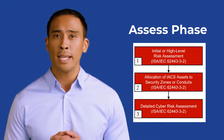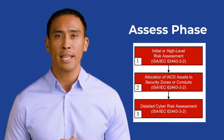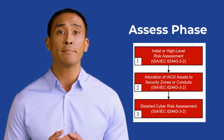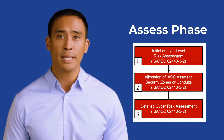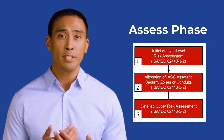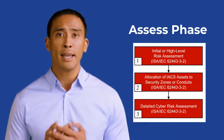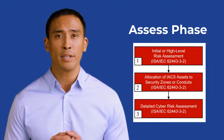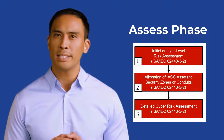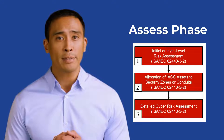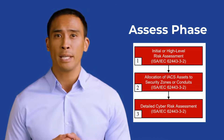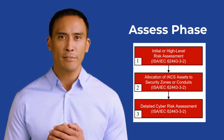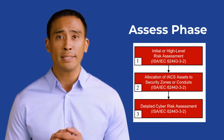We begin with the assess phase. Topics include high-level cyber risk assessment, allocation of IACS assets to security zones or conduits, and detailed cyber risk assessment. ISA Standard 62443-3-2 provides guidelines for the assess phase. Start by identifying and cataloging all IACS assets, including controllers, sensors, and network components. Conduct a thorough risk assessment to evaluate the potential impact of cybersecurity threats, prioritizing risks based on their criticality and likelihood of occurrence. Perform vulnerability scanning and penetration testing to identify weaknesses in your system.